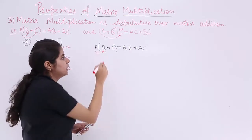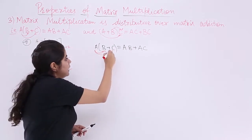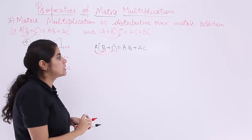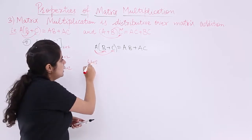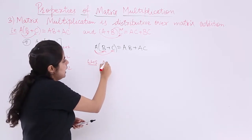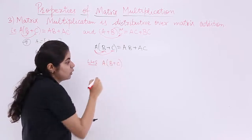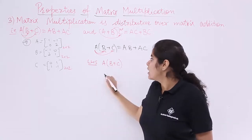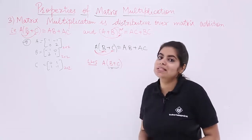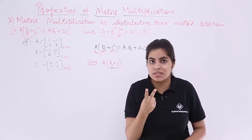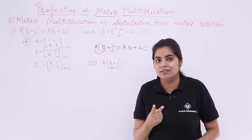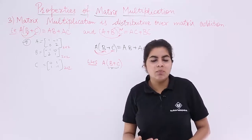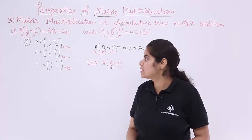First let's take the LHS, the left-hand side, which is A(B + C). What we have to do first is compute B plus C, that means the addition of the second and third matrices. Both are two-by-two, so they can be added.